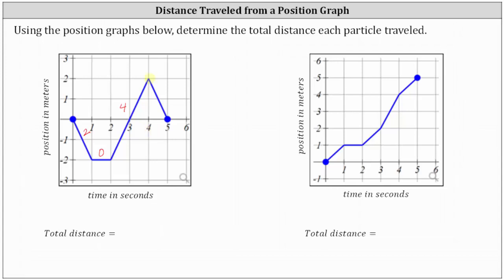Finally, from four seconds to five seconds, the particle travels from a position of positive two meters back to position zero, which is a distance of two meters. Particle one travels two plus four plus two meters, or a total distance of eight meters.